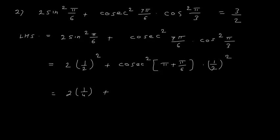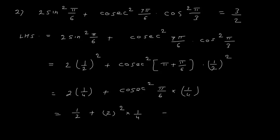Now cosec(180 + theta): from our previous lectures, when we have pi plus some angle, the ratio does not change — cosec remains cosec — but the sign changes. However, since we are squaring, it is ultimately a positive sign. So I write cosec square pi upon 6 into 1 upon 4. This is 2 upon 4 that is 1 upon 2 plus — sin 30 is 1 upon 2, so cosec 30 is 2 — here it is 2 square into 1 upon 4. So I get 1 upon 2 plus 4 into 1 upon 4 is 1, giving 3 upon 2.